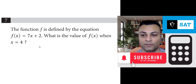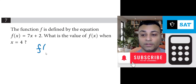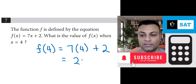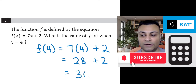They're asking for f of 4. f of 4 is 7 times 4 plus 2. You can use your calculator. You would get 28 plus 2, or 30. The final answer is 30.